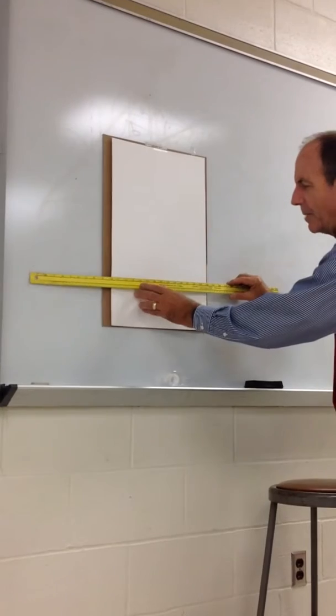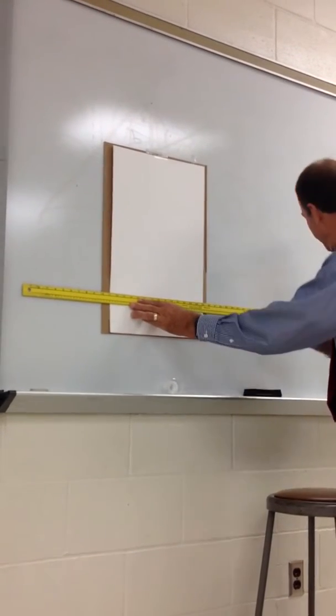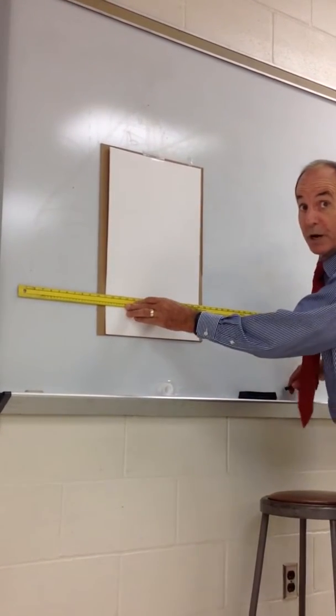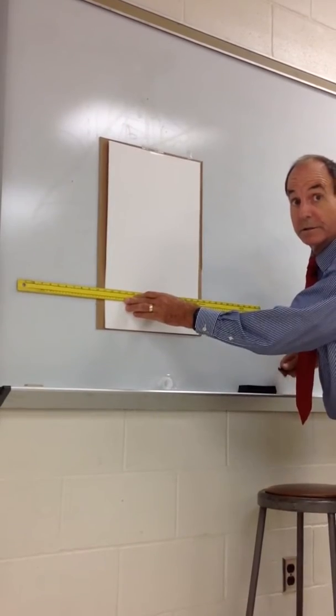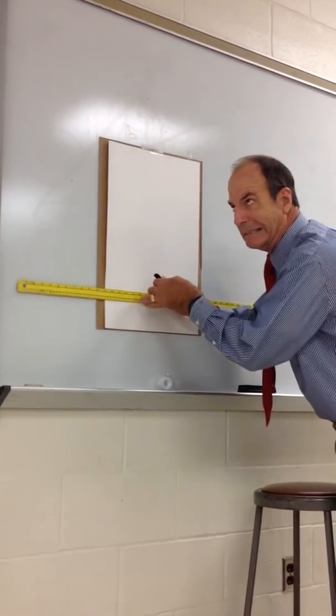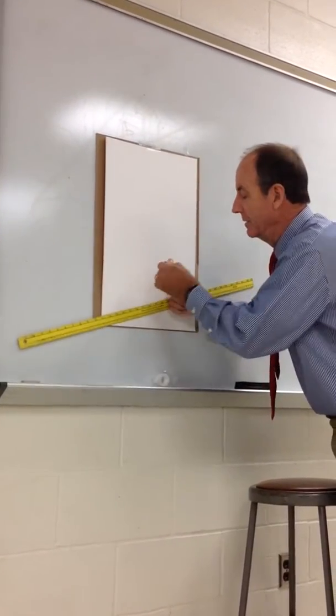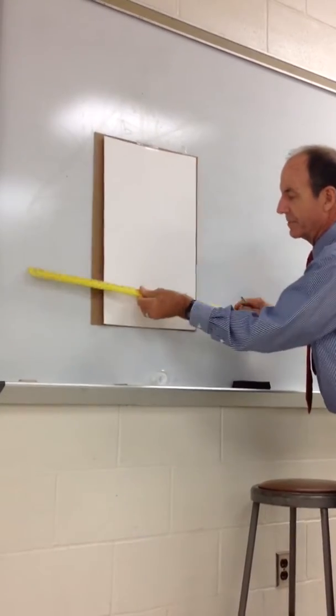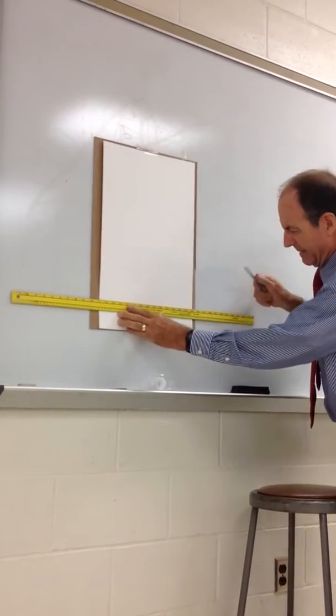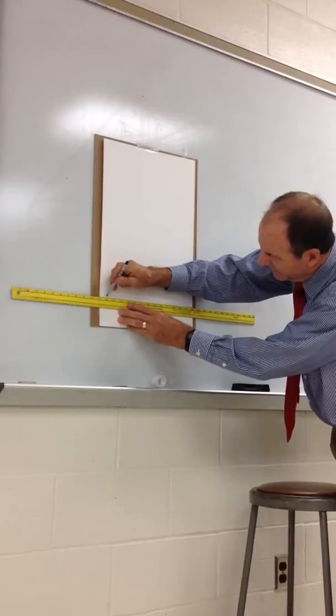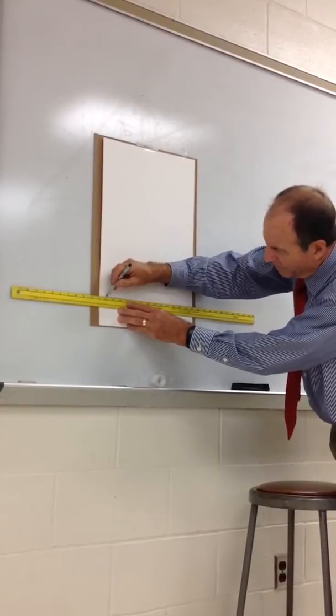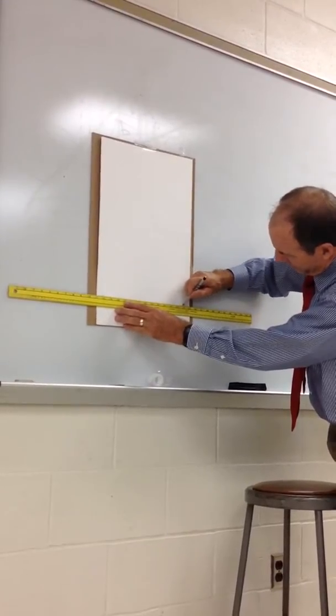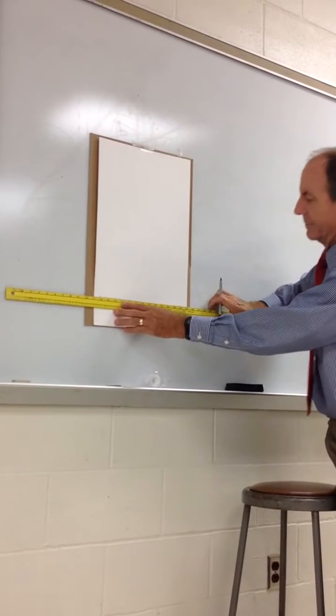So the first thing I'm going to do is I'm going to come up with a line segment that's 12 long. And I'm going to do 12 inches. You're going to do 12 centimeters. So I'm going to start there. That's right at the 12 mark. And I'm going to go all the way up to the 24. And that's exactly 12 inches long. When you do it, it's going to be 12 centimeters.